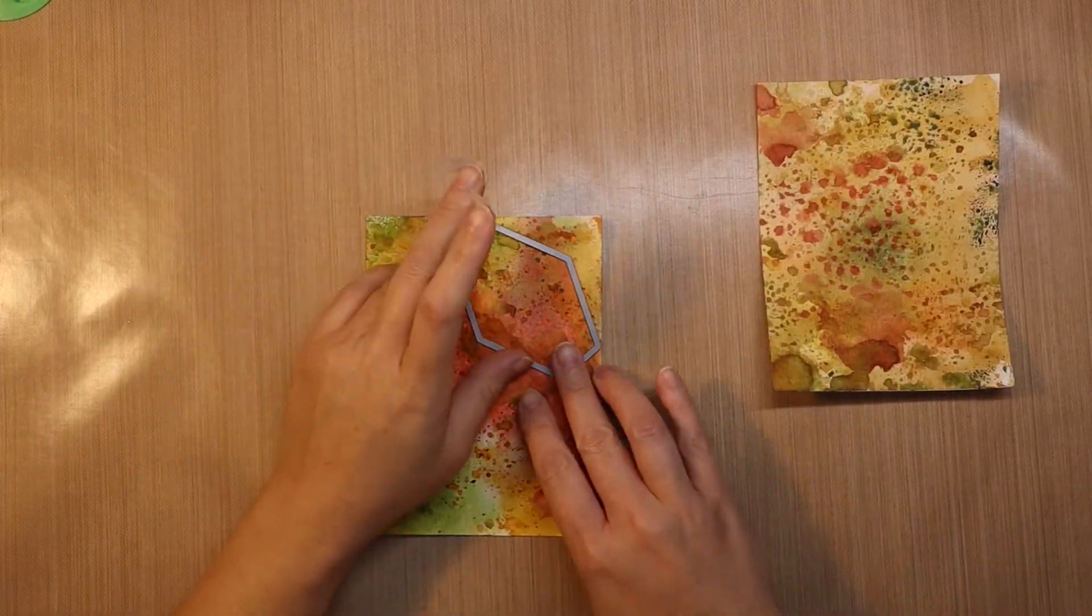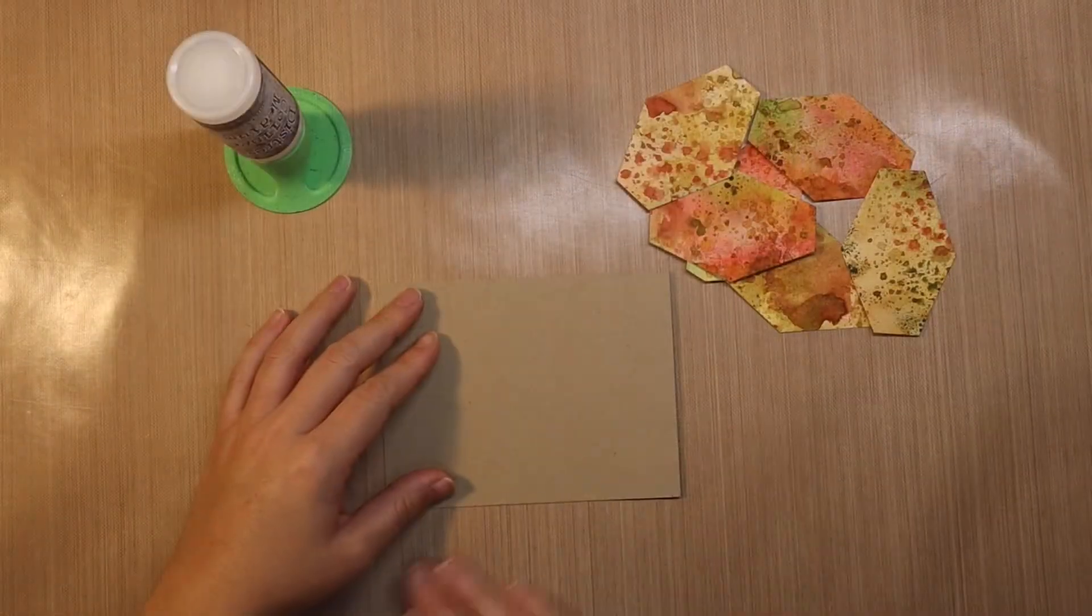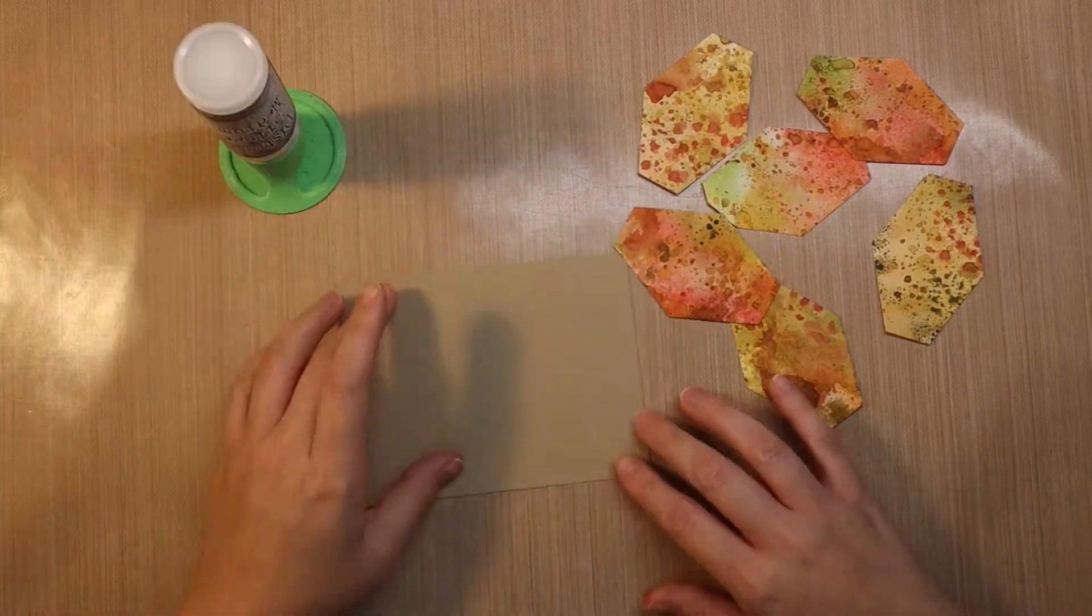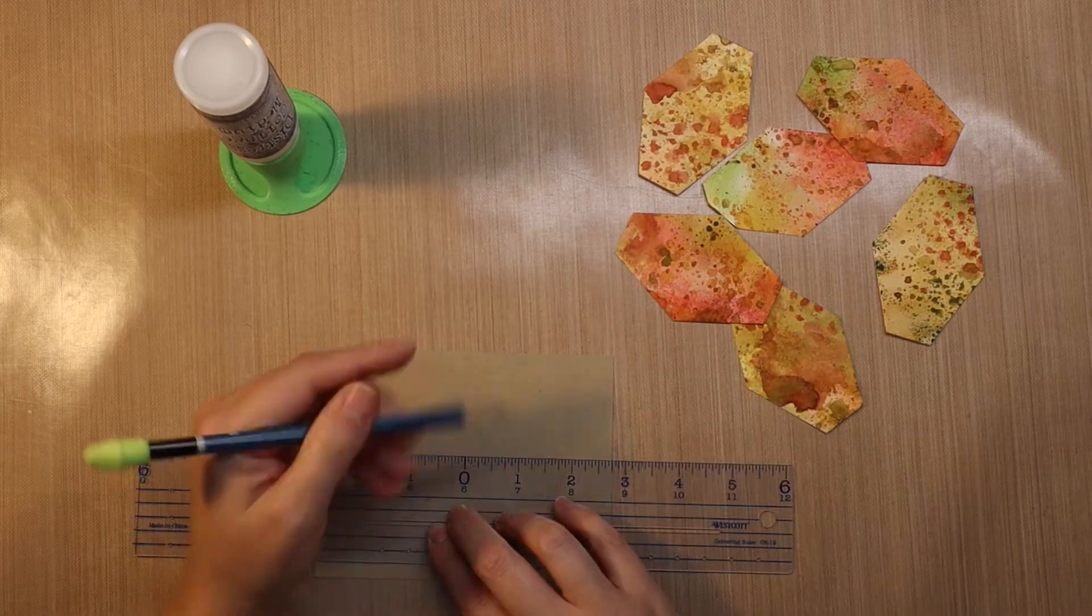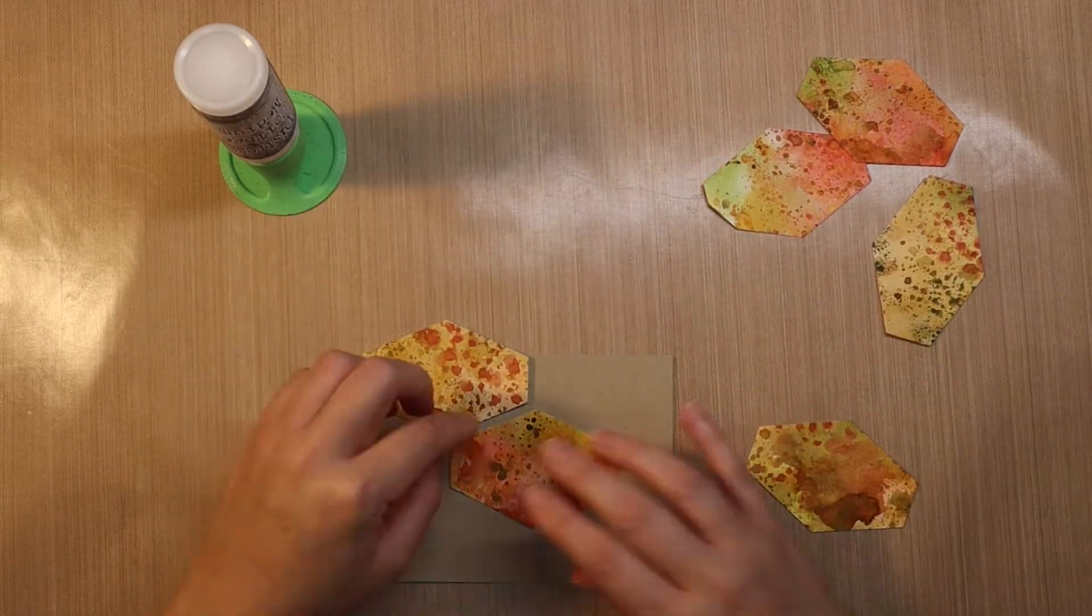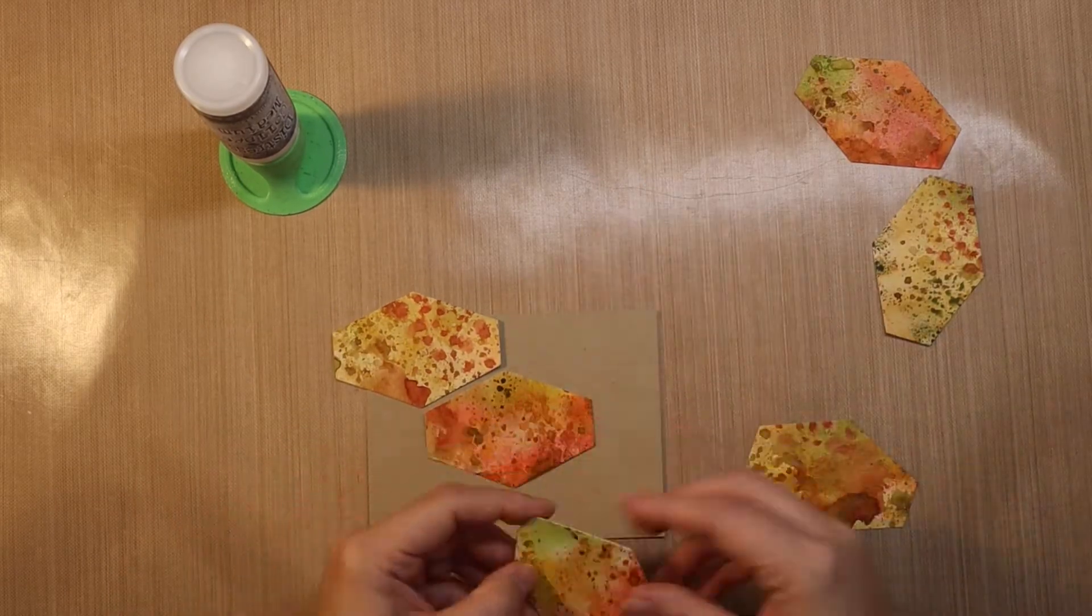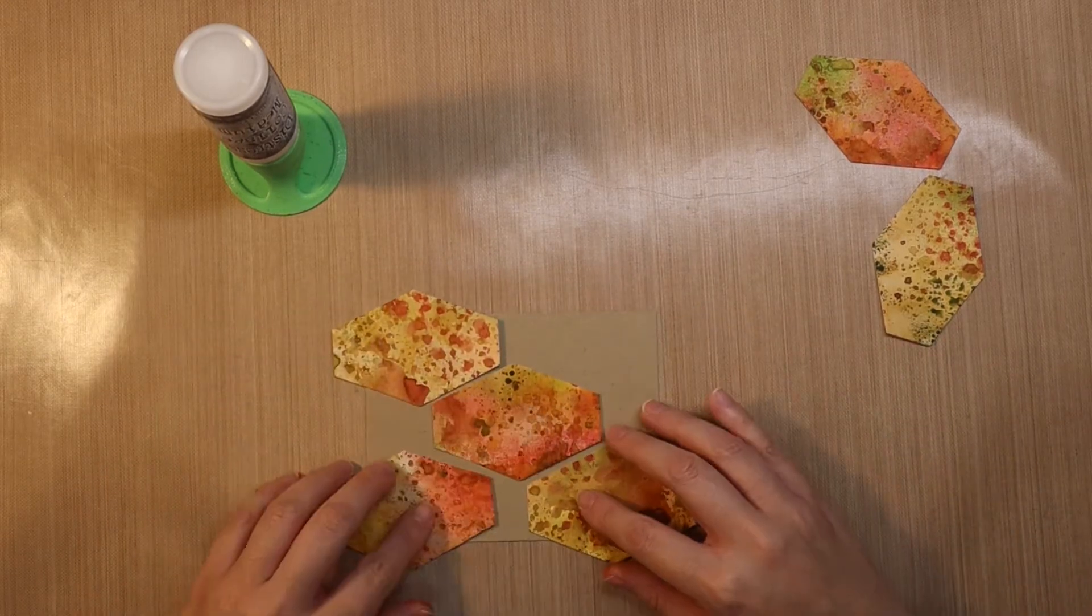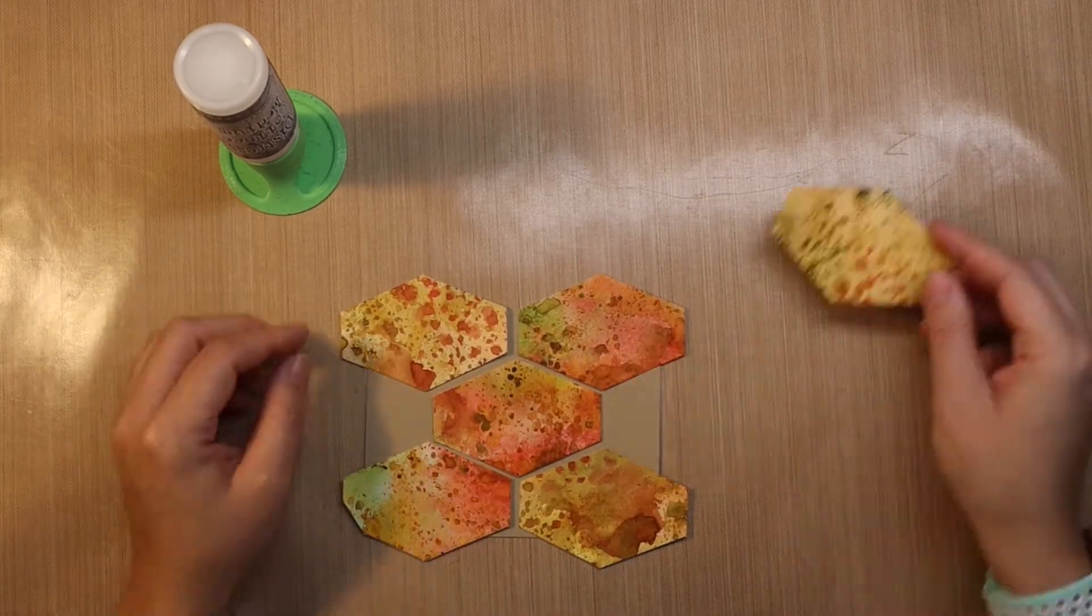I move on to using the Oblong Hexagon die from The Stamp Market, and I'm able to get three hexagons cut from each panel. So I end up with six altogether. I'm just using a centering ruler here to find the center of this card, and then I'm going to kind of decide how I want these oblongs placed. You can see on this panel right here, it was kind of off the panel a little bit, the die cut, but that doesn't matter because I know I'll be trimming it off my card anyway.